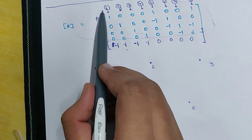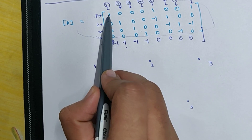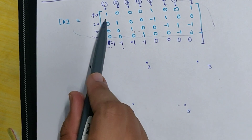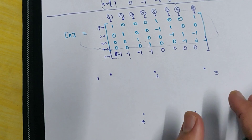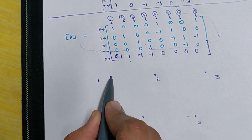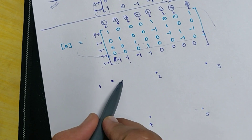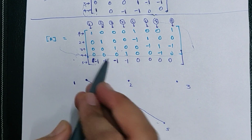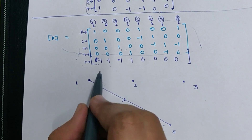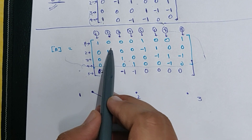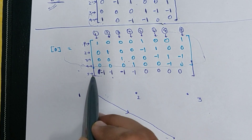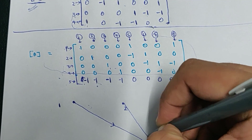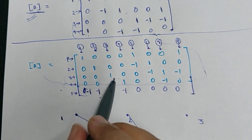We have drawn five nodes. For the first branch, it is between the first and fifth node. The current is flowing from node 1 to node 5. So we draw a line from node 1 to node 5, and the direction will go from 1 to 5. For the second branch, it is starting from node 2 and ending at node 5. So we draw a branch from node 2 to node 5 flowing in that direction.